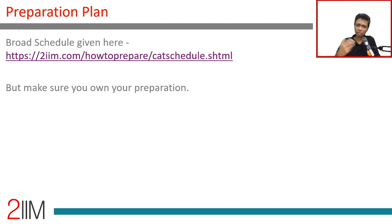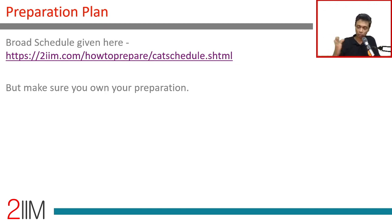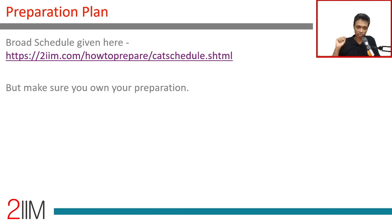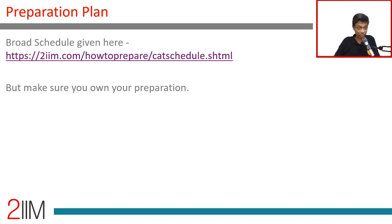People frequently ask: give me a day-by-day schedule, an hour-by-hour schedule. But you have to own your preparation. You need to say: I'm good at quant, I know basic geometry, so I'll spend more time on verbal and DILR. Or: I read a lot, so my verbal is in place, I'll spend more time on quant. You've taken CAT before so you know the moving pieces — you've got to take that ownership based on your strengths and weaknesses.